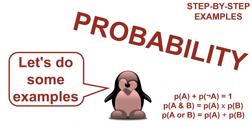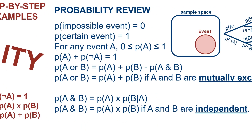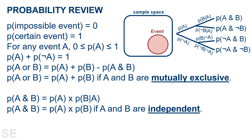Let's do some step-by-step examples of probability calculations. First, a quick review of the basics of probability. When we calculate probabilities, we are thinking of the chances of outcomes in a sample space meeting the criteria for the event we're interested in.